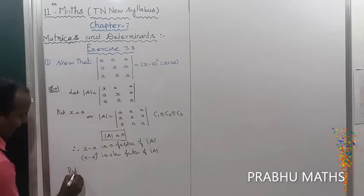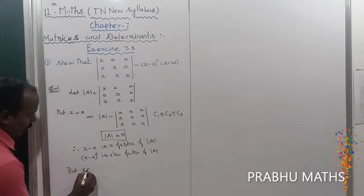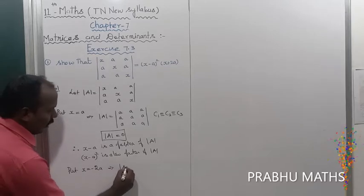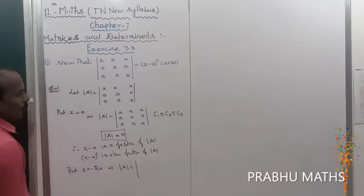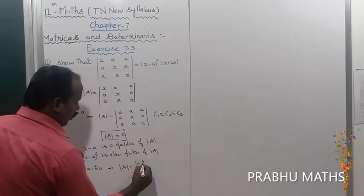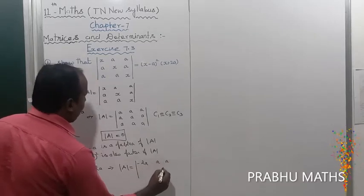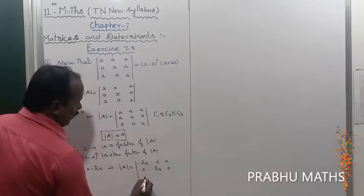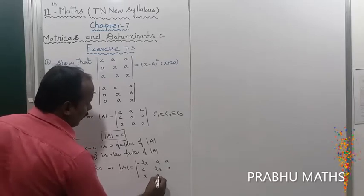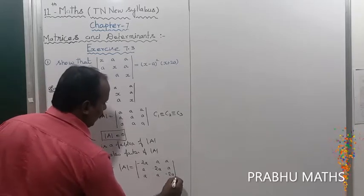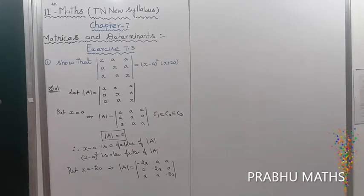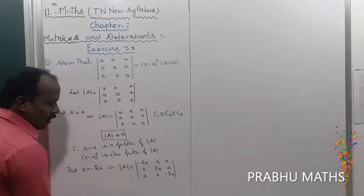Next, put x equal to minus 2a, which implies the determinant of minus 2a a a / a minus 2a a / a a minus 2a. Apply the column operation c1 tends to c1 plus c2 plus c3.